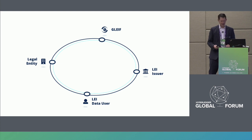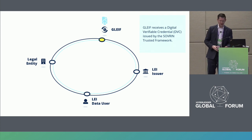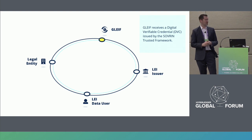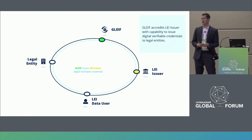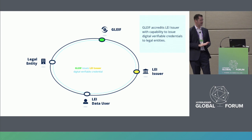It all starts at the top with GLEIF, who in our scenario would receive a digital credential from a trusted framework — in this case, Sovrin — which basically tells you that GLEIF is GLEIF and is able to digitally accredit LEI issuers. With this, GLEIF is able to provide a digital verifiable credential to an LEI issuer who wants to participate, telling you they are an accredited LEI issuer and that they are able to issue digital LEIs.